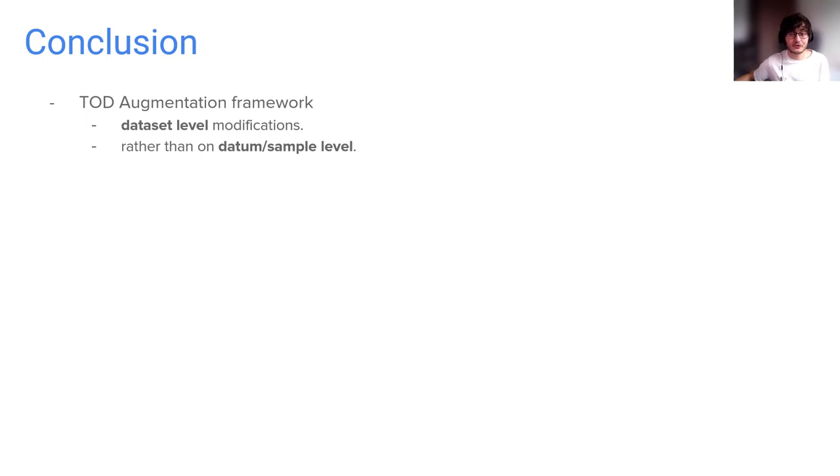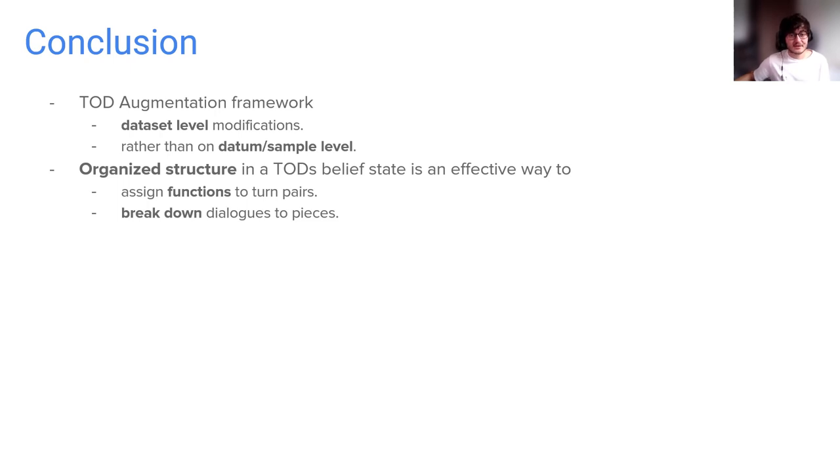To sum up, we introduced a task-oriented dialogue augmentation framework, and this framework, different from others, applies modifications on the dataset level rather than on the datum or sample level. Thus, we believe that exploiting the organized structure in task-oriented dialogue's belief state is an effective way to assign functions to turns and to effectively break down dialogues to even smaller pieces. We further believe that augmentation is not the only way to utilize this breakdown, and hope there will be more future studies that apply it to other aspects in task-oriented dialogues such as intent recognition, response generation, etc.